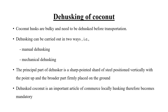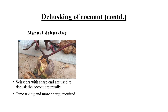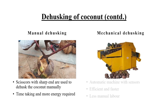The first step is dehusking, which is done either manually or mechanically. In manual dehusking, scissors with sharp ends are used to dehusk the coconut manually. It is to be noted that the time taken here is larger and more energy is required. Mechanical dehusking is aided with the help of mechanical dehuskers which have sensors. It is efficient, faster and requires less labor.